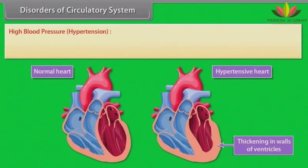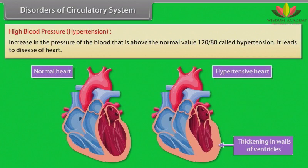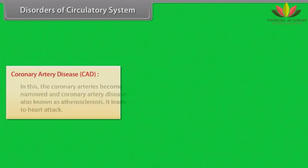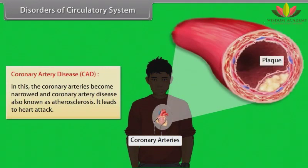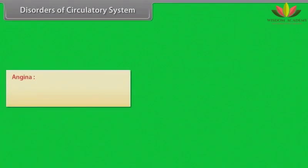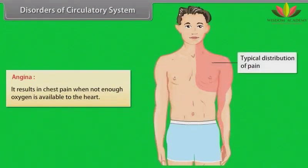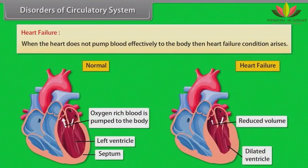Disorders of the circulatory system. Hypertension is an increase in blood pressure above the normal value of 120/80 mmHg; it leads to heart disease. Coronary artery disease (CAD), also known as atherosclerosis, involves narrowing of the coronary arteries and leads to heart attack. Angina results in chest pain when insufficient oxygen is available to the heart. Heart failure occurs when the heart does not pump blood effectively to the body.